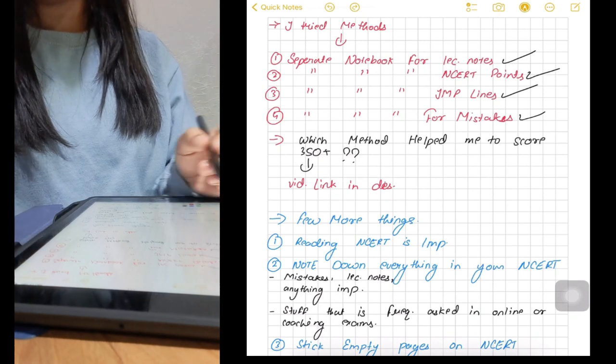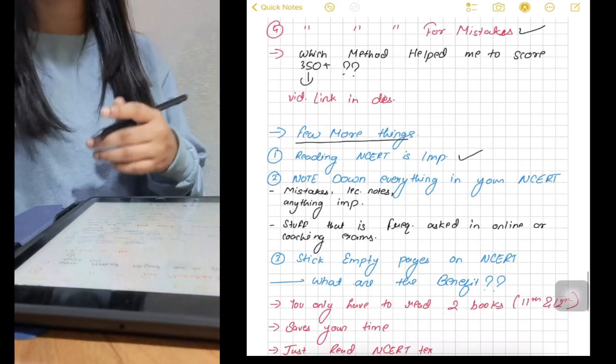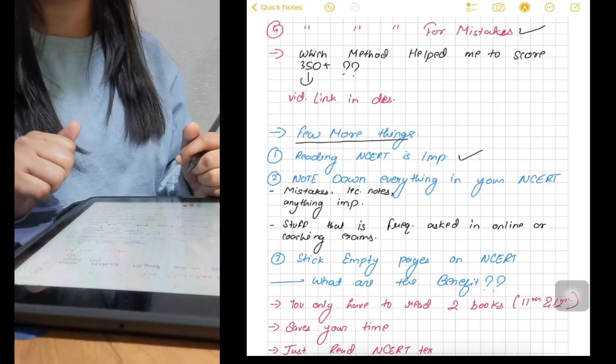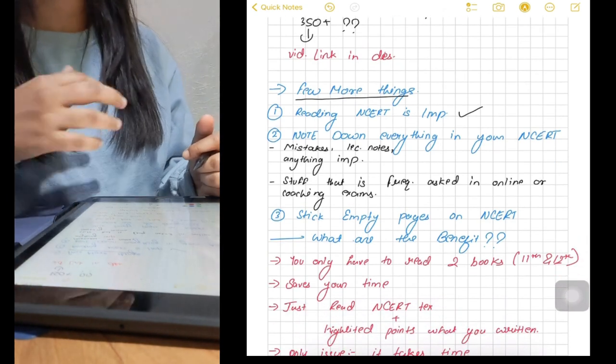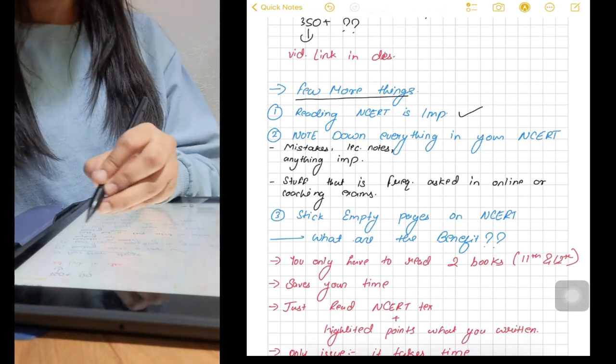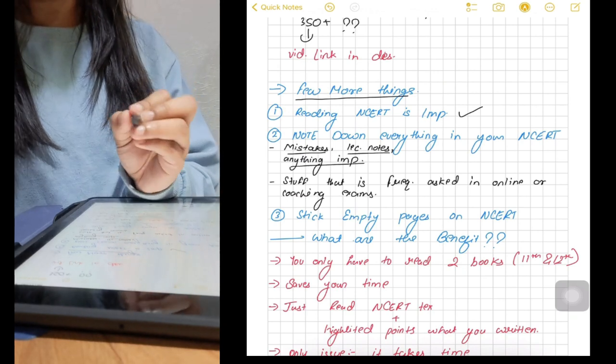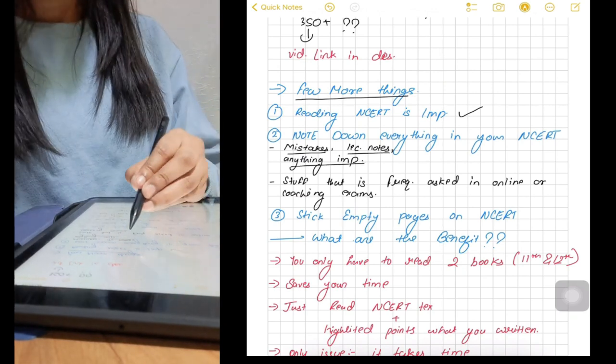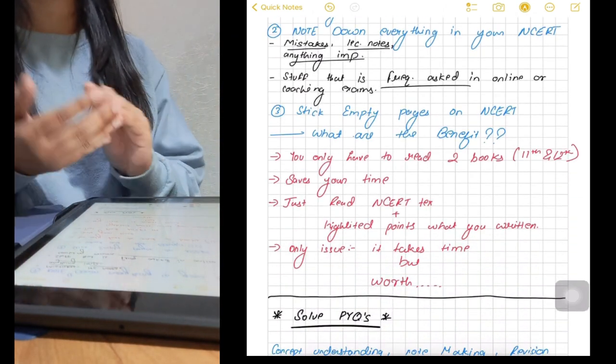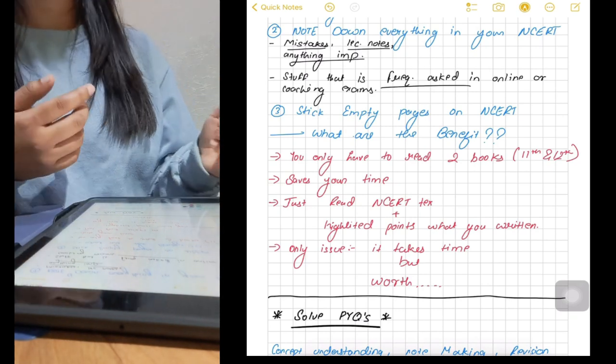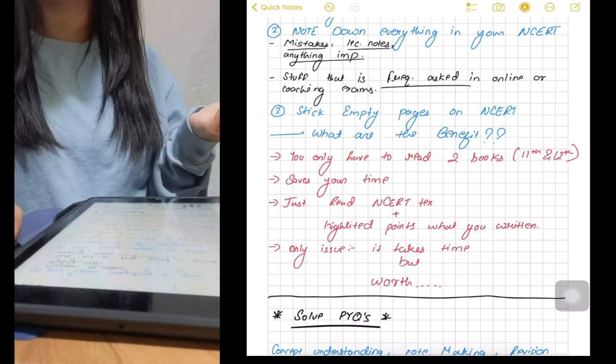A few things I want to share here is since NEET question includes direct lines of NCRT which means it is extremely important to read NCRT as many times as possible. The problem arises when you have to read notes, NCRT and some modules in a short duration of time for a test. So, the best way according to me is to note down everything you feel to be important in your NCRT. Whether it's important point from lecture notes or mistakes you made in mocks and basically anything you feel that could be asked in NEET. You can also stick empty pages on NCRT and write on them.